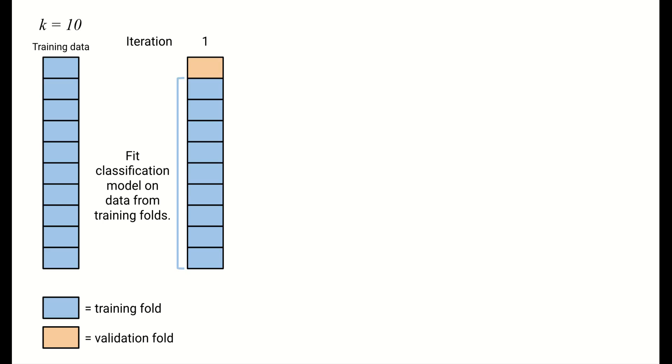In each iteration, we use the data in nine of the folds as training data to fit the classification model. We test the model on the one remaining fold, the validation fold, to obtain an overall accuracy estimate.